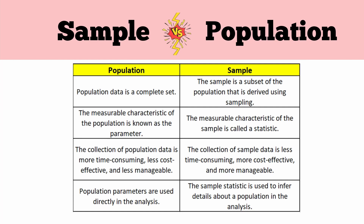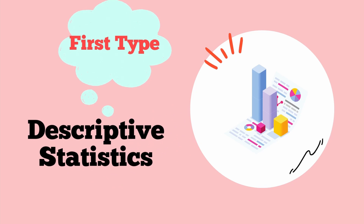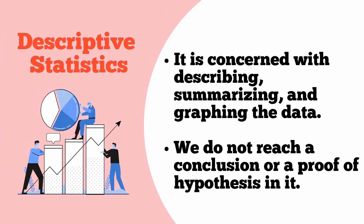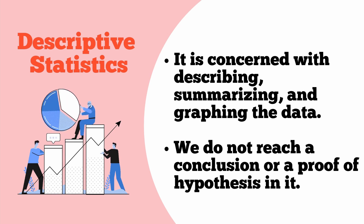The next topic is types of statistics. There are broadly two types. The first is descriptive statistics — as the name suggests, this type is concerned with describing, summarizing, and graphing data. It involves summarizing a large amount of data so it is easier to interpret. In this type, we generally do not reach a conclusion or proof of a hypothesis, but just describe and summarize the data. It can be done on both a sample and whole data, and is used to present quantitative descriptions in a manageable form.